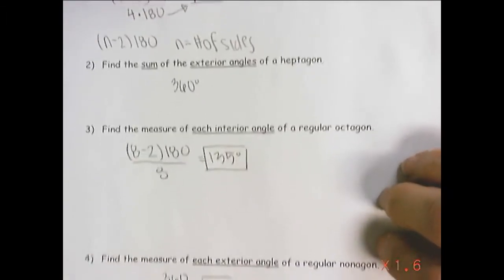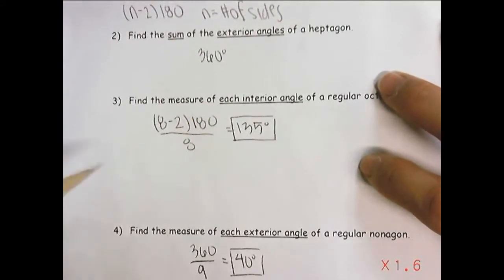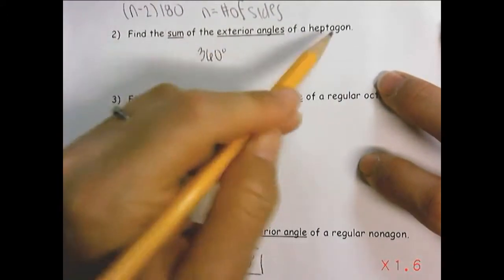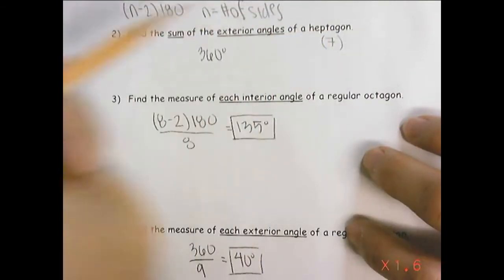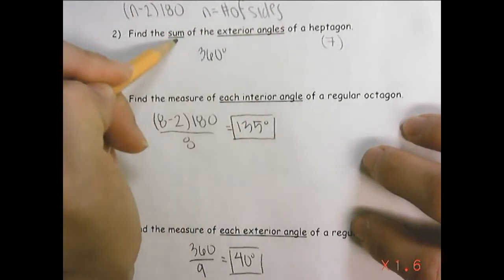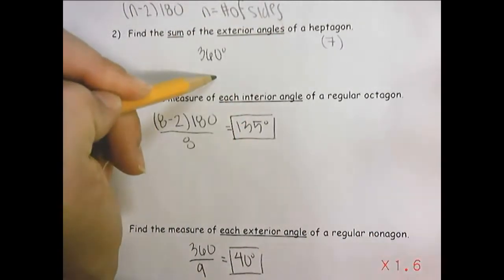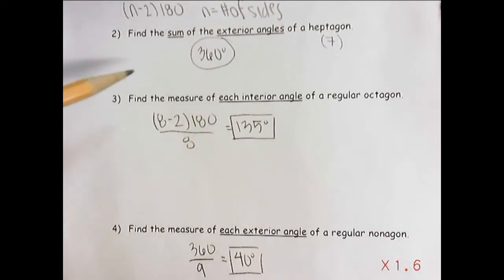Find the sum, again sum, of exterior angles of a heptagon. Heptagon has seven sides, but that doesn't matter, because exterior angles, the sum of them, the angles on the outside of a figure, will always equal 360. Always.